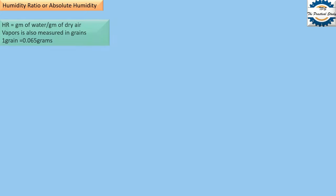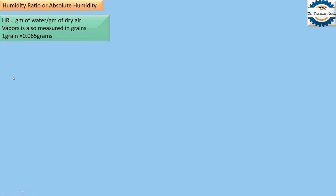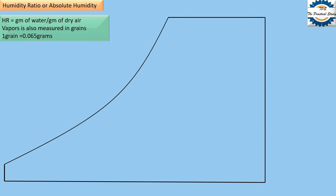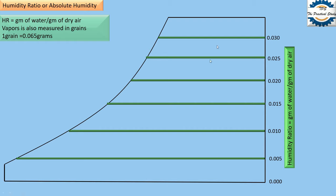Next is humidity ratio or absolute humidity. If you have 1 gram of air, the amount of water present in that 1 gram of air in grams is the humidity ratio. Since the water vapor quantity is very small, it is also measured in grains, which is the smallest unit — 1 grain equals 0.065 grams. The humidity ratio scale is on the y-axis (vertical axis), and its lines are horizontal lines extending toward the wet bulb temperature line.